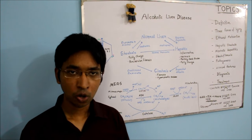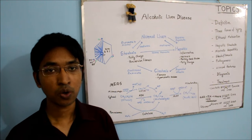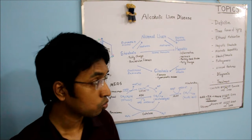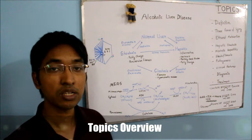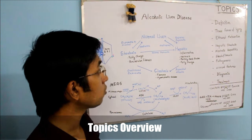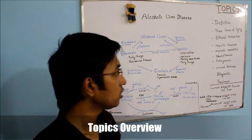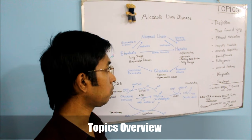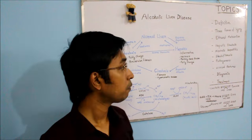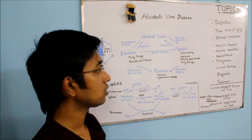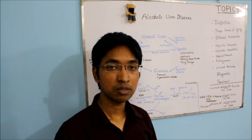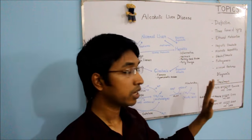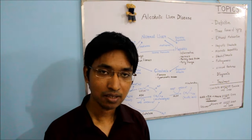Today's topic is alcoholic liver disease. Since this is a very big topic, I will make two videos on this topic. This is part one of the series. In this video we will talk about the definition of alcoholic liver disease, followed by a brief discussion about the three forms of liver injury, their relationship with one another, ethanol metabolism, and the morphology of hepatic steatosis, alcoholic hepatitis, and steatofibrosis. In part two, we will finish by talking about pathogenesis, clinical features, diagnosis, and treatment.